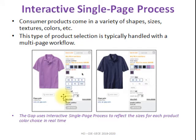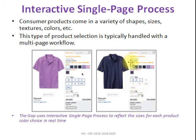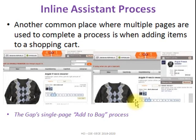The first type is the interactive single page process. All the process steps are available in a single page. For example, if you want to purchase a product from a website, all information — the color of the t-shirt, size, quantity, purchase details, and payment details — is provided on a single page. A single process available on a single page is called an interactive single page process.